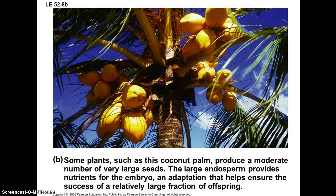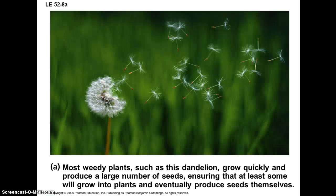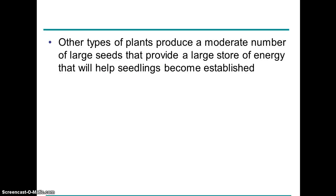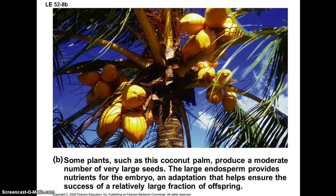Reproductive output can vary. You can have the strategy of producing lots of offspring like a dandelion, or like a coconut, producing relatively few but much larger seeds with a lot more food in them for the embryo that will develop.